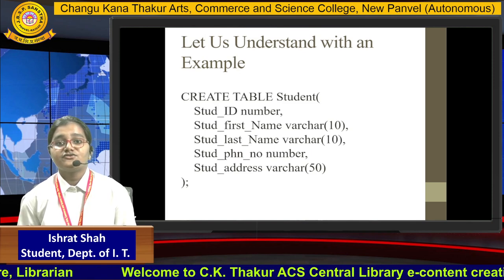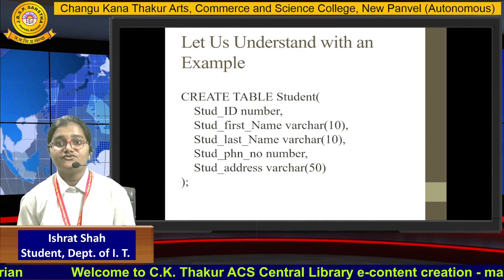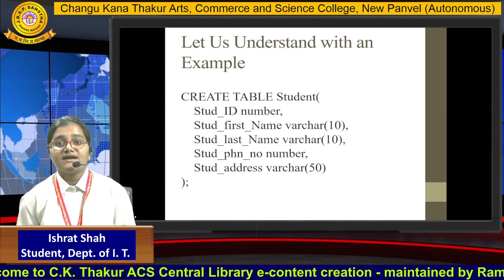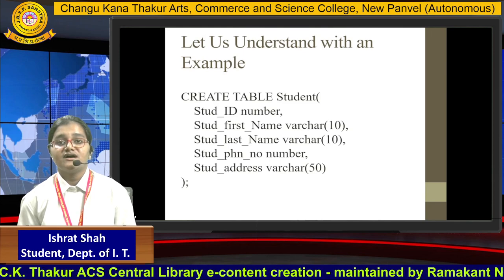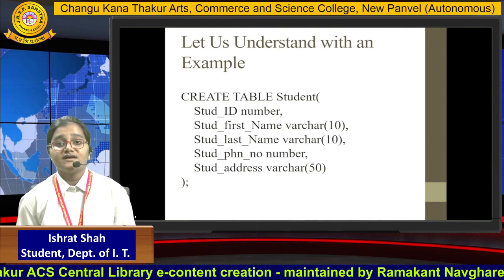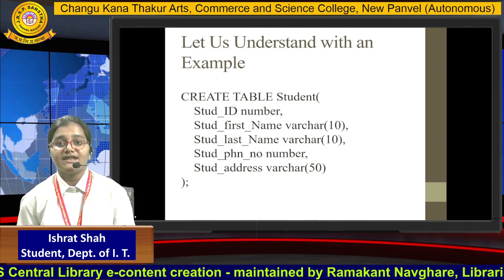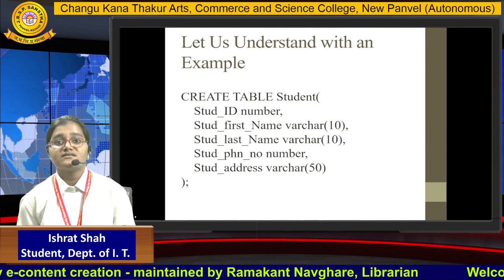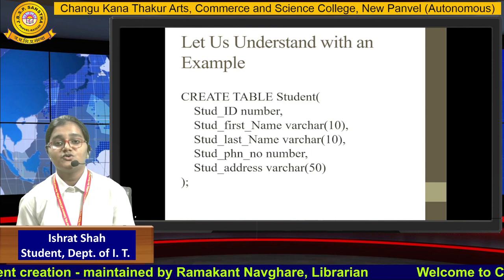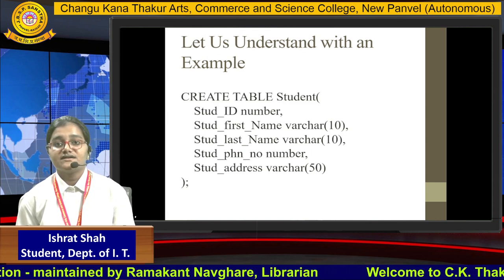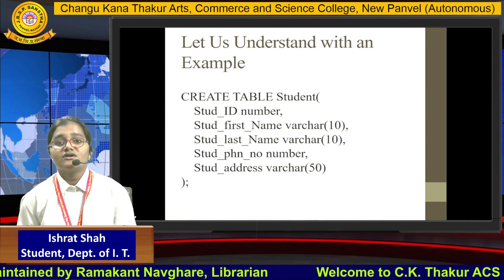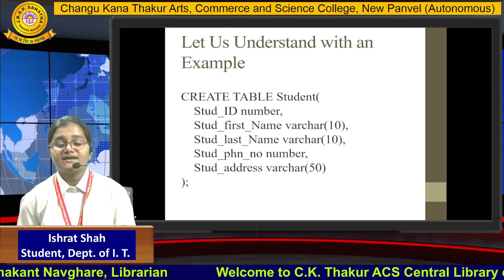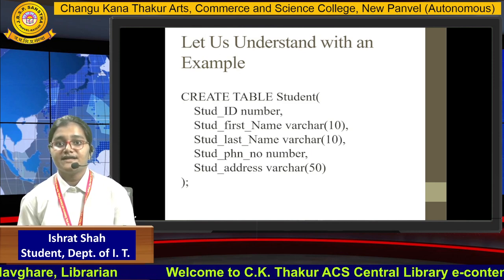The second column is student first name and its data type is VARCHAR, and inside the bracket after VARCHAR we can specify the number of characters that can be entered in that column. VARCHAR means the characters which are included in our column. The third column is student last name with data type VARCHAR and number of characters set to 10.